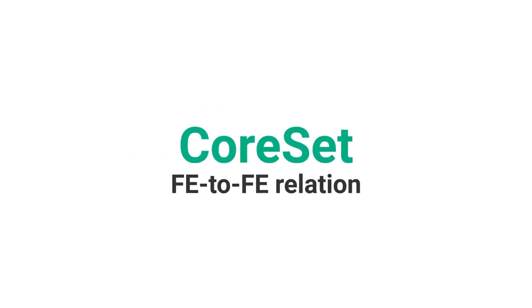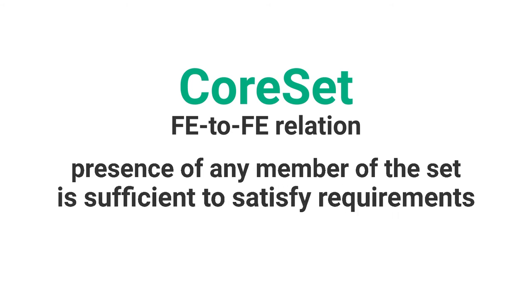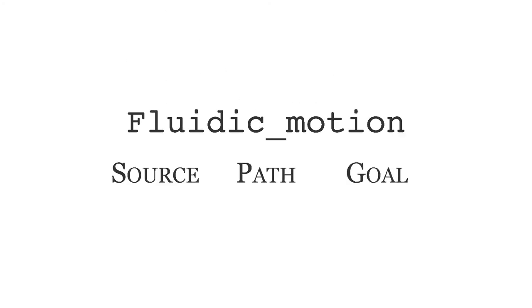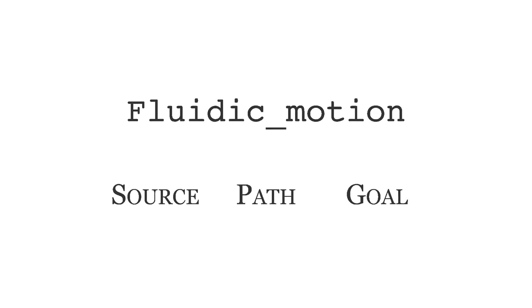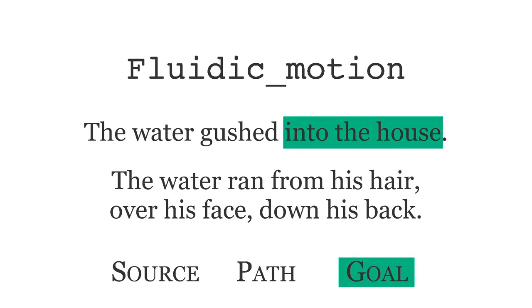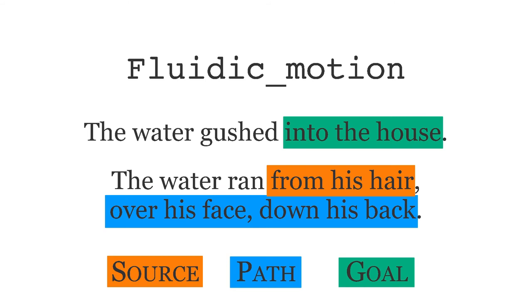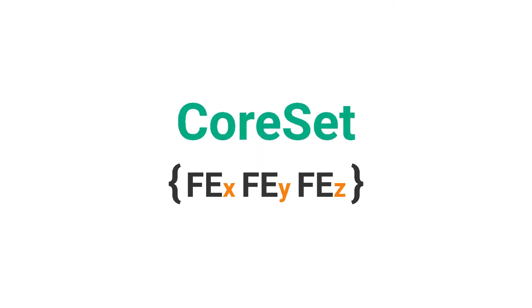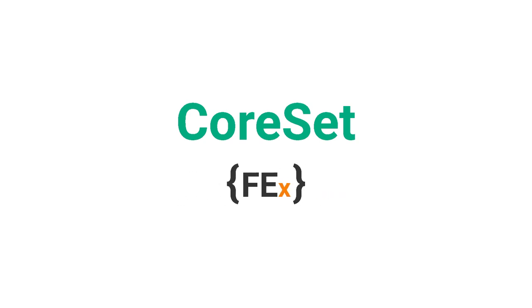Finally, we also have the core set relation. It occurs when the presence of any member of the set is sufficient to satisfy the requirements of the LU. Take a look at what happens with the source, path, and goal frame elements in the fluidic motion frame. In the sentence, the water gushed into the house, into the house is the goal. And in the sentence, water ran from his hair, over his face, down his back, we have source and path instantiated. In this situation, and in various motion frames, core frame elements form a core set. Hence, although they can all be instantiated in sentences, it is also possible that only one of them occurs.